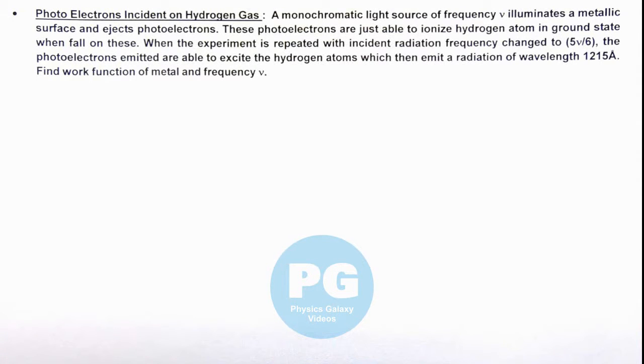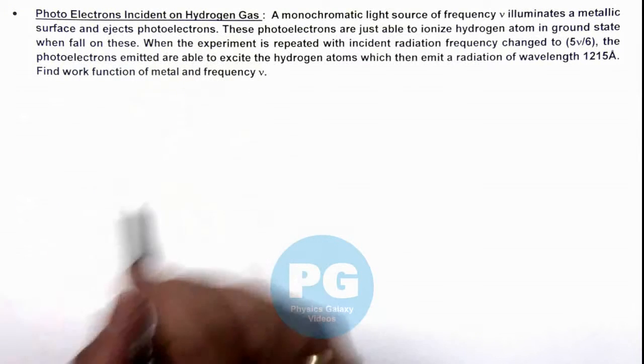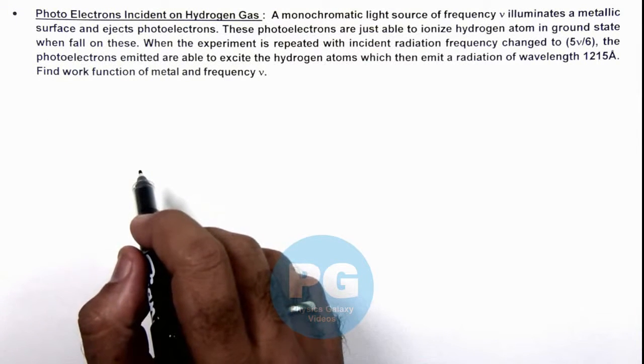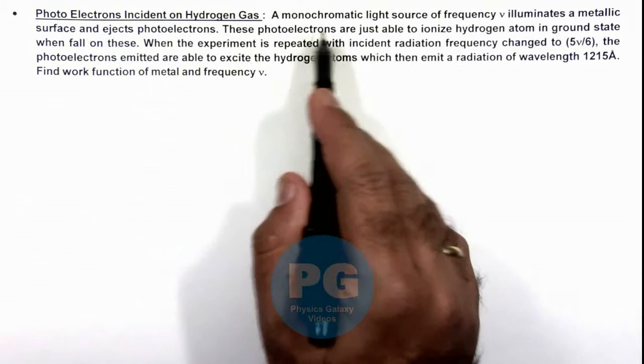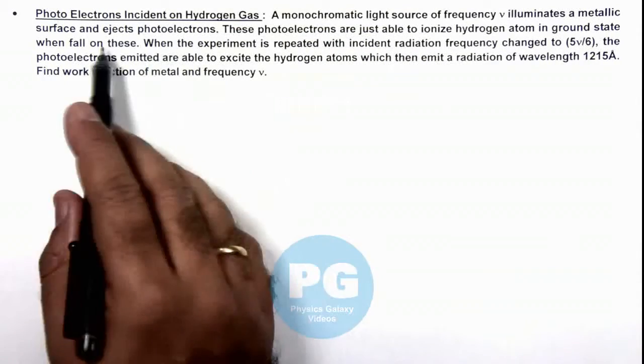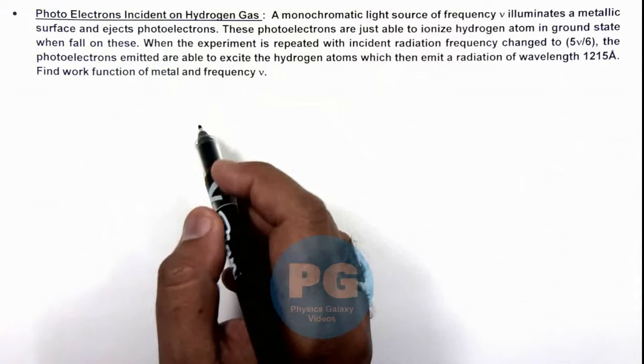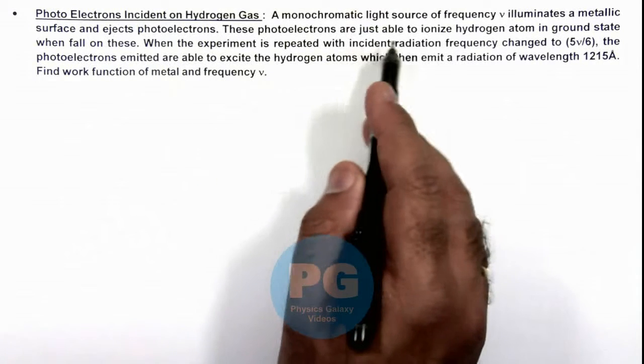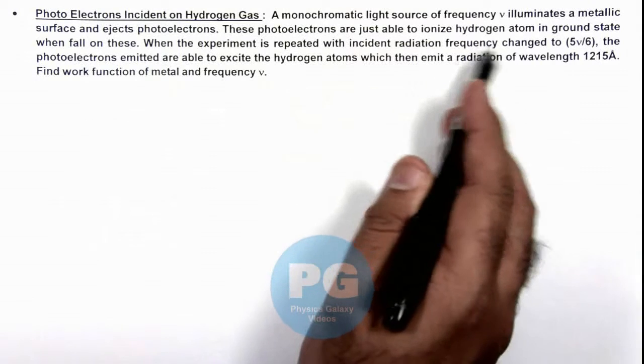In this illustration, we'll be analyzing a situation where photoelectrons are incident on a hydrogen gas. We are given that a monochromatic light source of frequency ν illuminates a metallic surface and ejects photoelectrons, and these photoelectrons are just able to ionize hydrogen atoms in ground state when they fall on these.